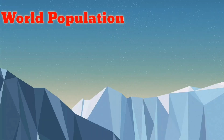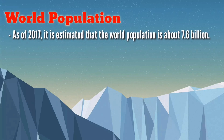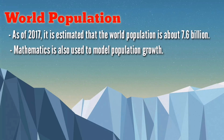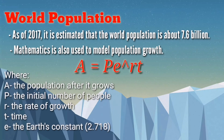Now let's talk about world population. As of 2017, it is estimated that the world population is about 7.6 billion. World leaders, sociologists, and anthropologists are interested in studying population, including its growth. Mathematics can be used to model population growth. Recall that the formula for exponential growth is A equals P times E raised to RT, where A is the size of the population after it grows, P is the initial number of people, R is the rate of growth, and T is the time.